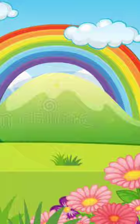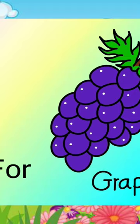D. D for duck. E. E for elephant. F. F for fish. G. G for grapes.